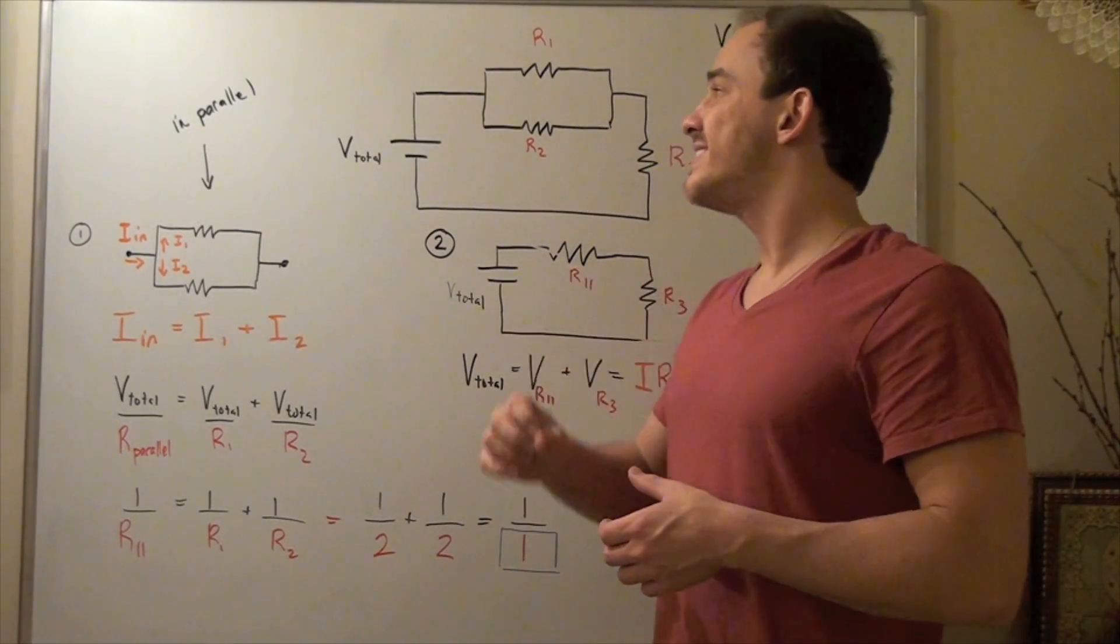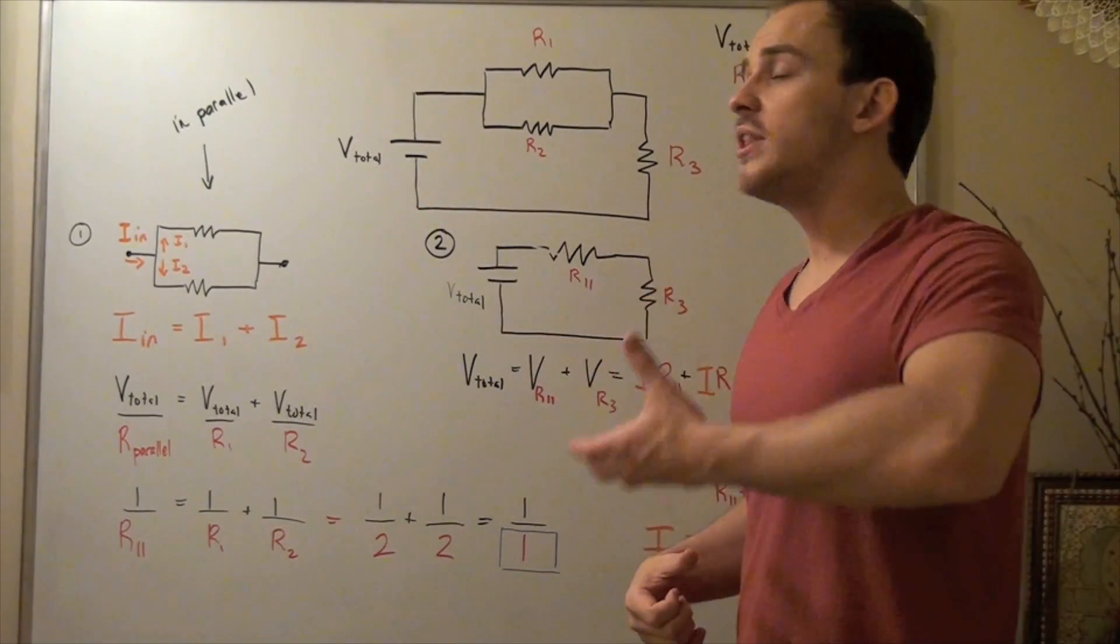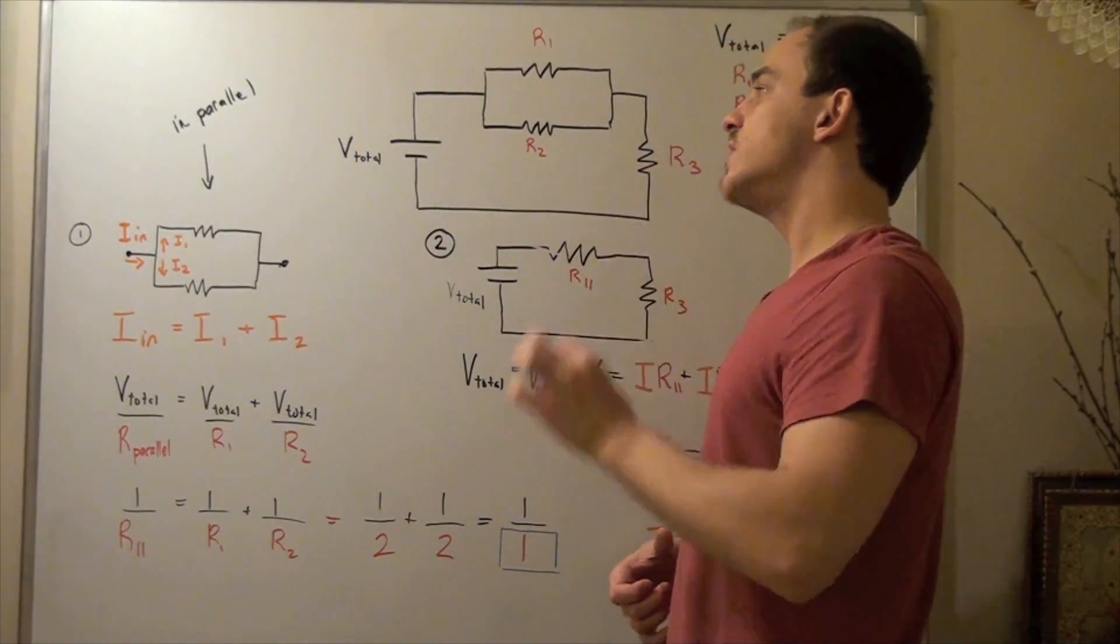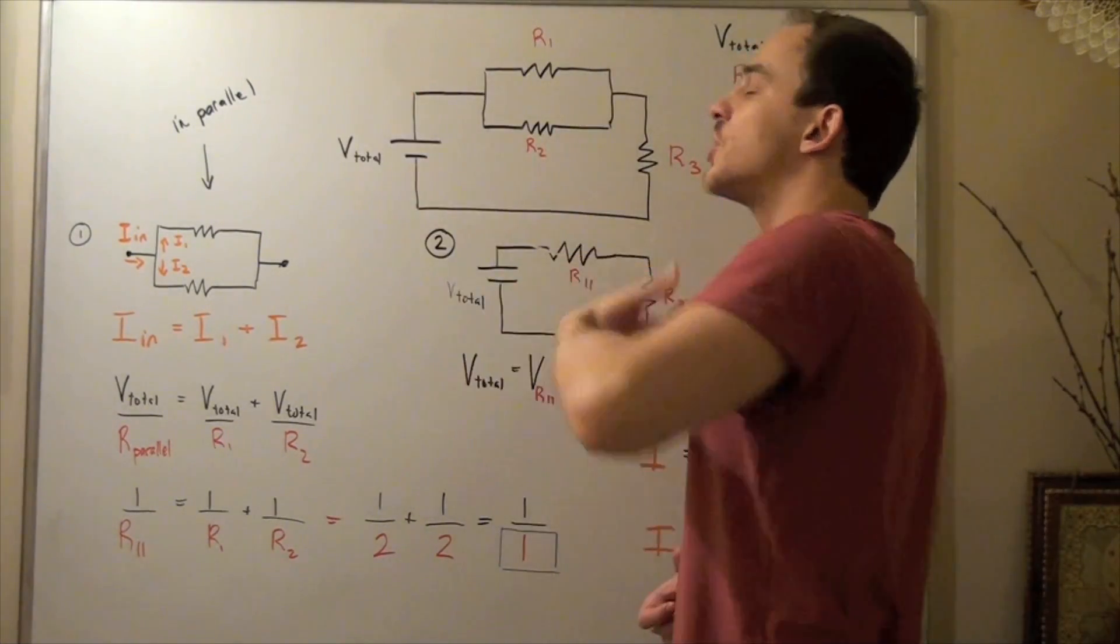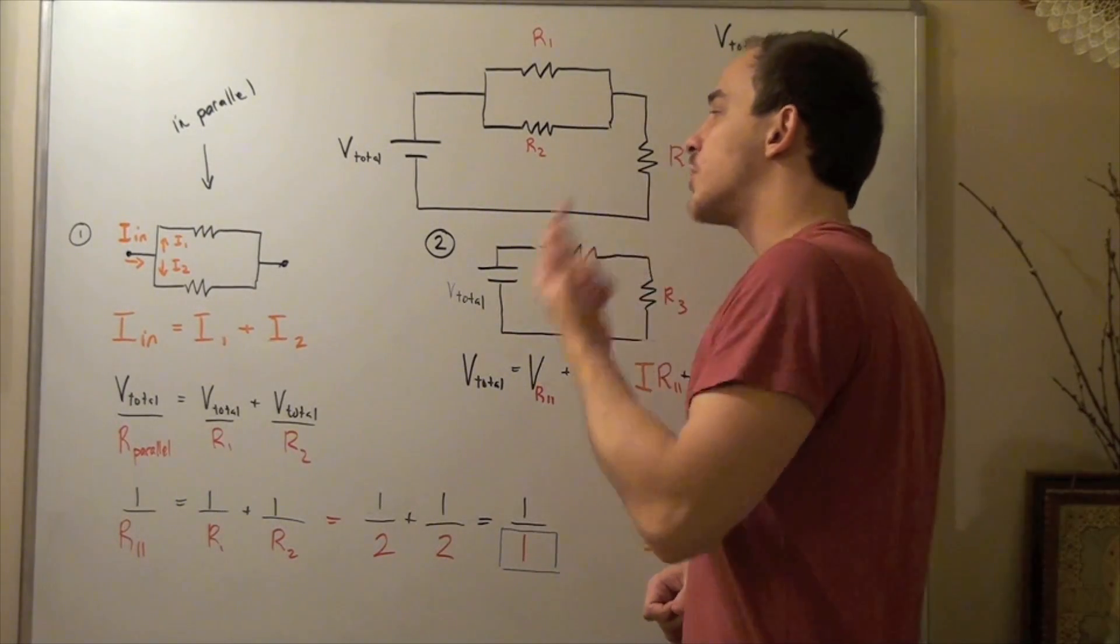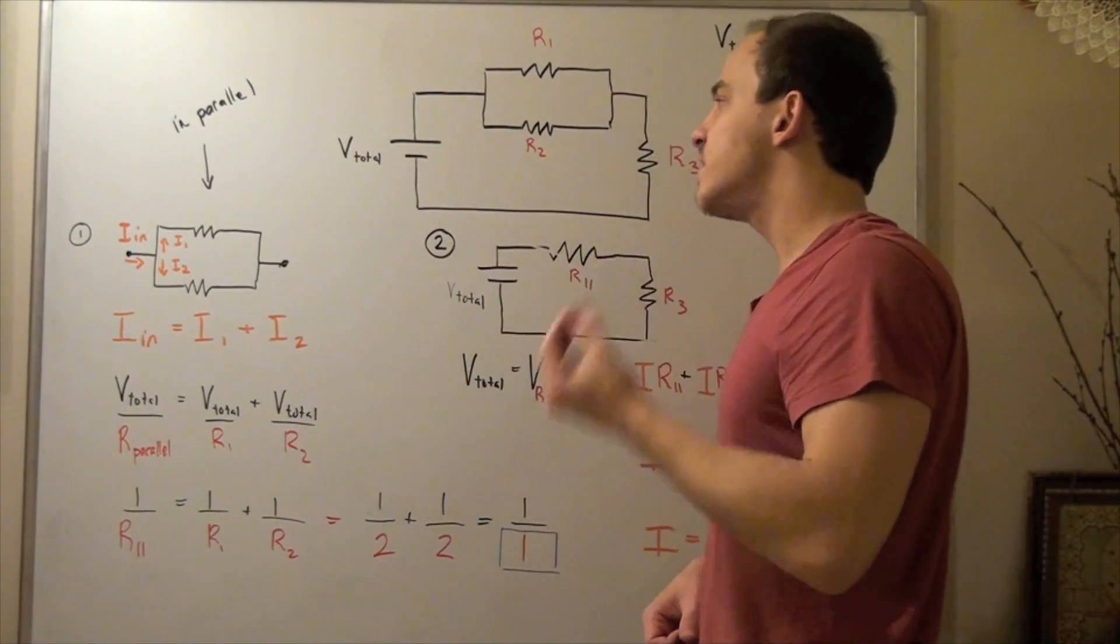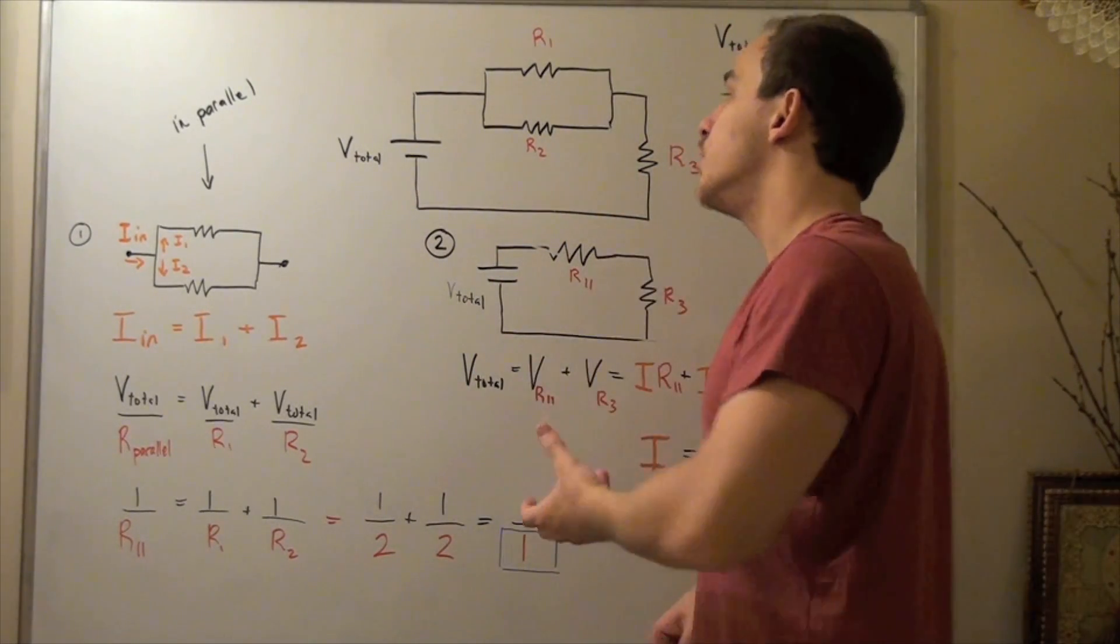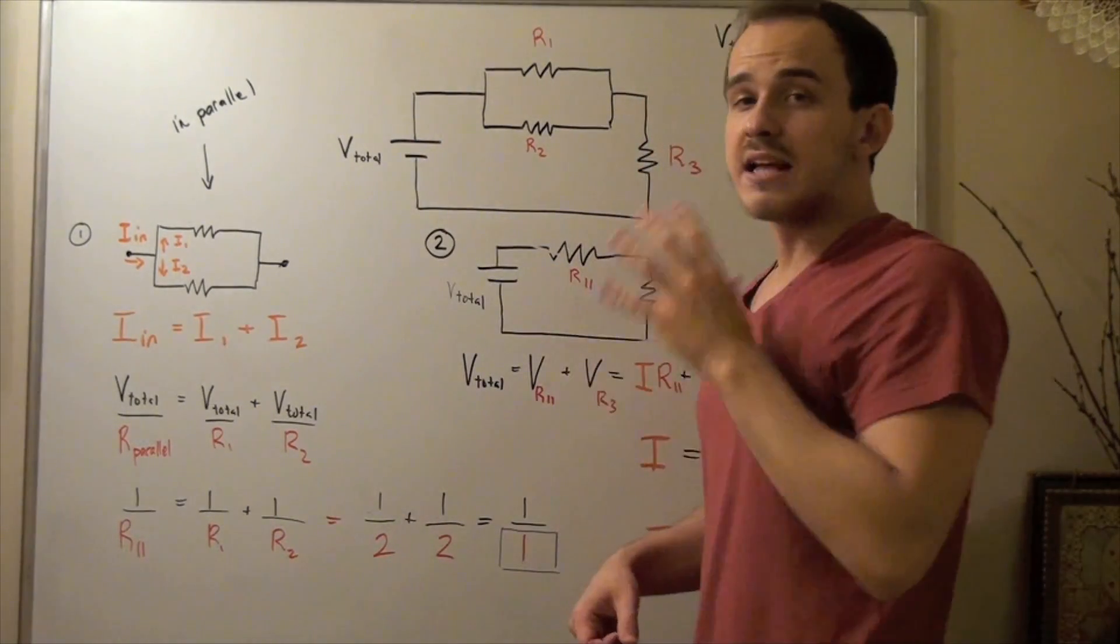Our goal will be to find the current that leaves our battery, the current that leaves our cathode. Remember, even though electrons travel from the anode to our cathode, our current by convention is in the opposite direction. So our current travels from our cathode to our anode, and we want to find the amount in amperes of current that leaves our 12-volt battery.